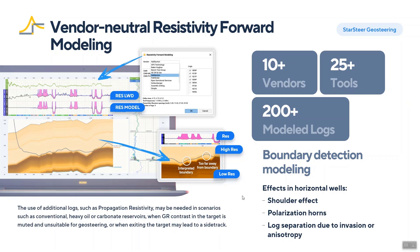So all those effects, in order to be correctly interpreted, need to be modeled. But because of the different tool specifications, tool vendors used to do the modeling by themselves. In the geosteering and geoscience package StarSteer, we added a universal algorithm that works with the majority of tools available on the market — so it's a vendor-neutral algorithm.